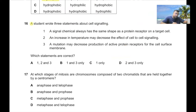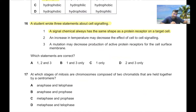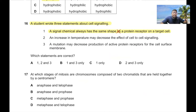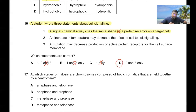Question 16: A student wrote statements about cell signaling. Statement 1 says a signal chemical always has the same shape as the protein receptor on a target cell — this is wrong; it has a complementary shape, not the same shape. This cancels out A, B, and C, so option D is the correct answer.